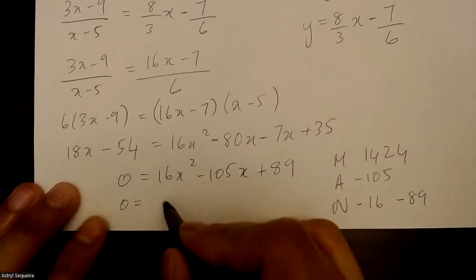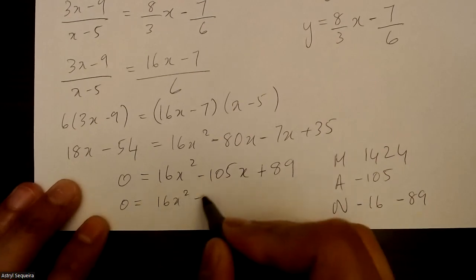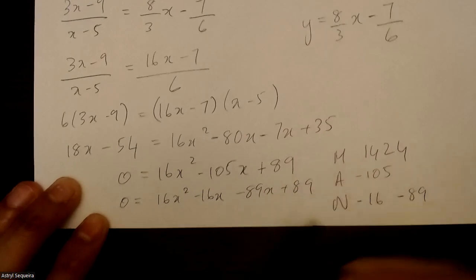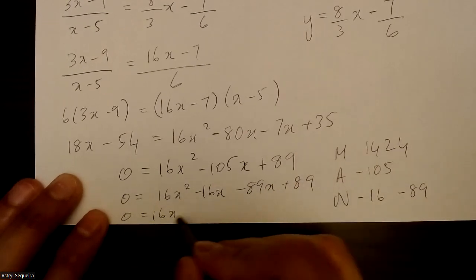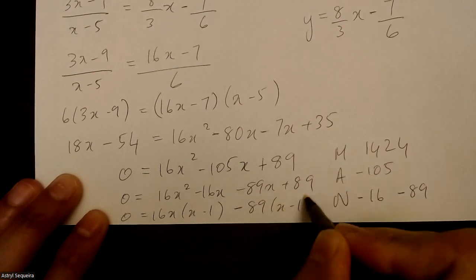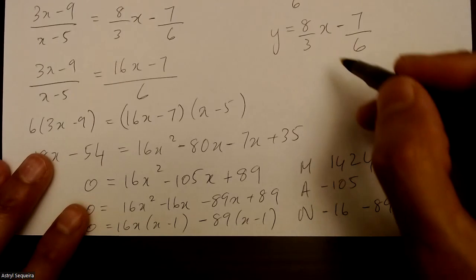So now I'm going to go 0 equals 16x squared minus 16x minus 89x plus 89. I'll factor by grouping. So 16x, x minus 1 minus 89, x minus 1. And I'll continue over here.